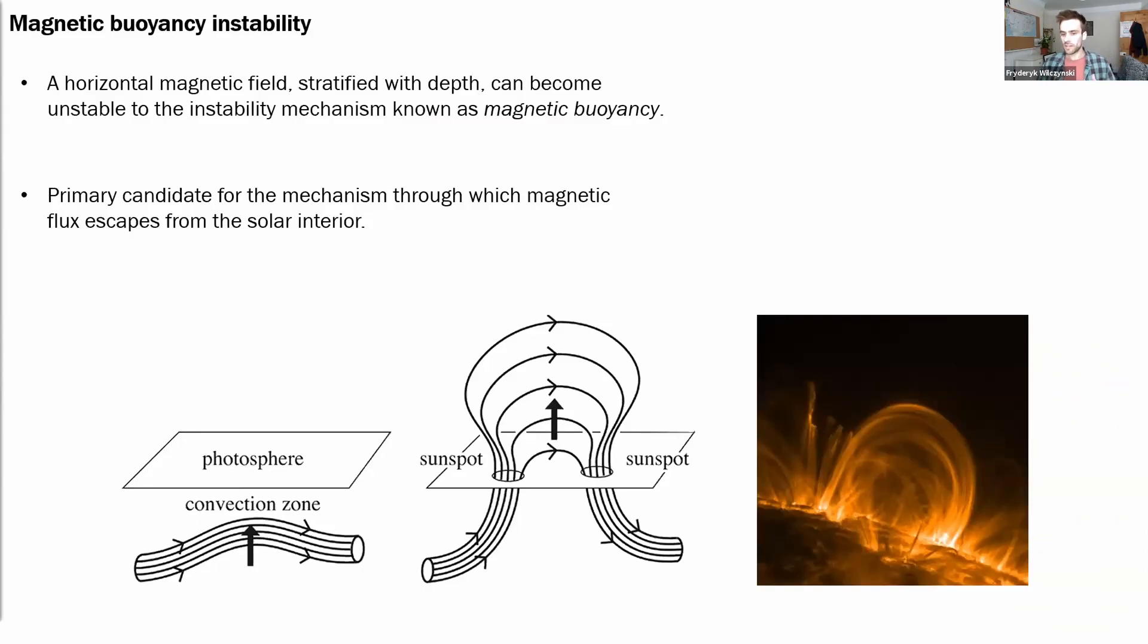In a layer of gas with a horizontal magnetic field that is increasing with depth, the weight of the gas is supported by both gas pressure and magnetic pressure, and as such the gas can support more weight than would be possible in the absence of the field.